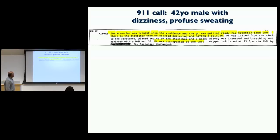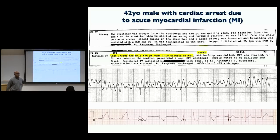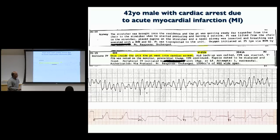A stretcher was brought into the residence. The patient was getting ready for transfer from the chair to the stretcher when he started posturing and having a seizure. He was transported into the ambulance, where the monitor showed ventricular fibrillation — a very chaotic activity emerging from the ventricles, the two bottom chambers of the heart. This rhythm is not compatible with life, so he was shocked out of it. The EKG then showed evidence of an acute heart attack.